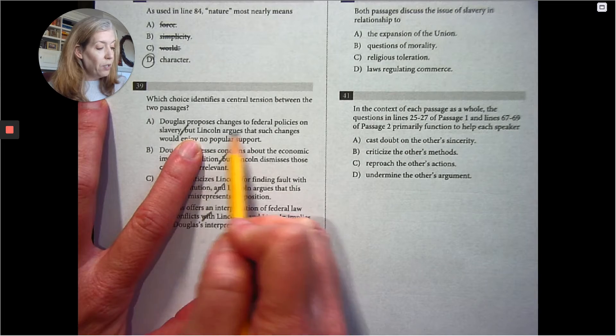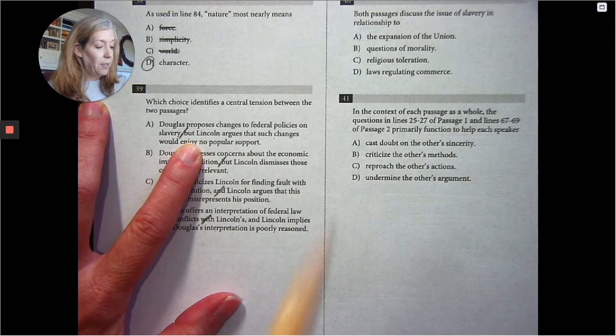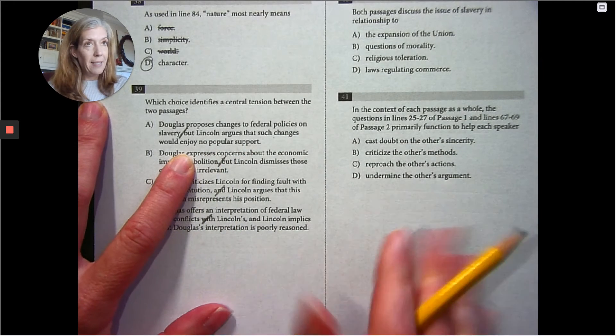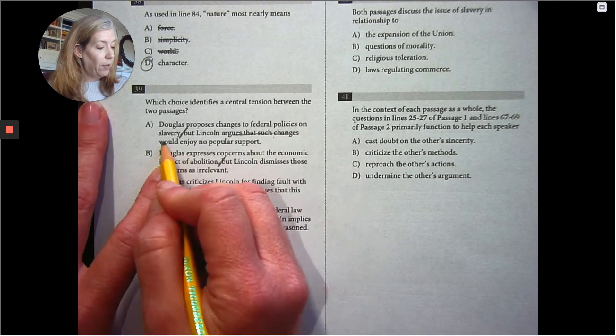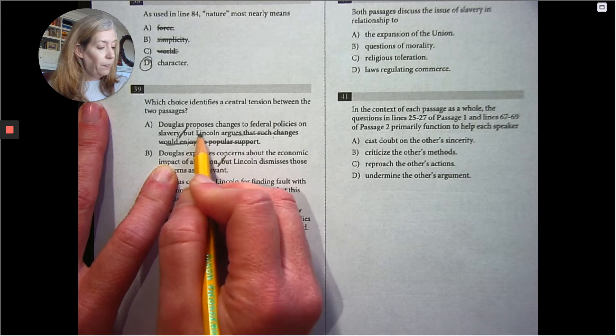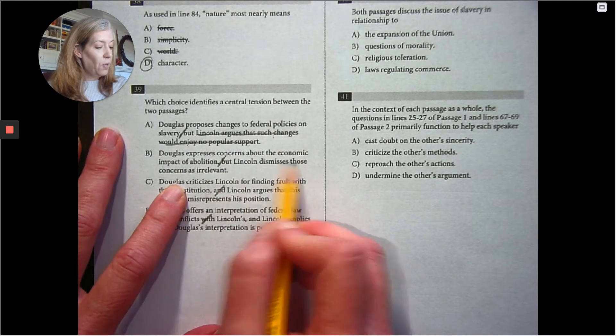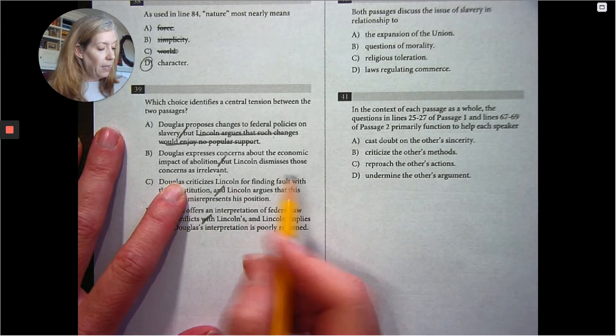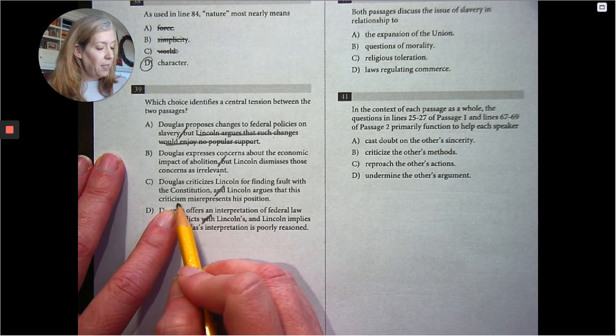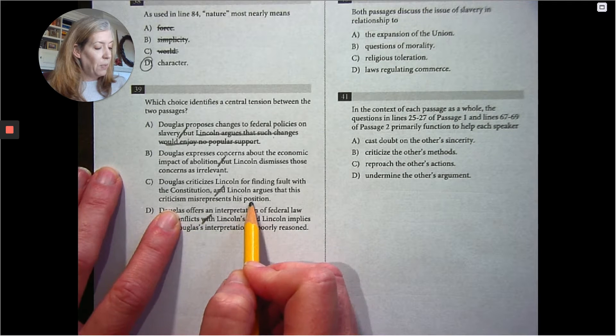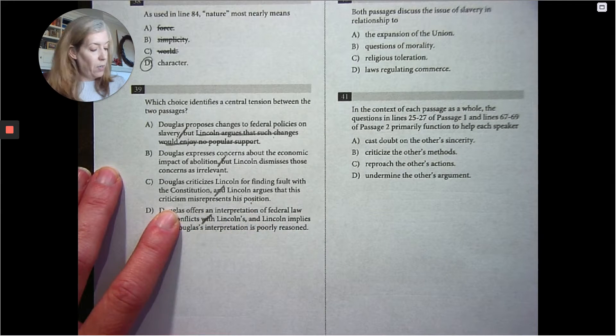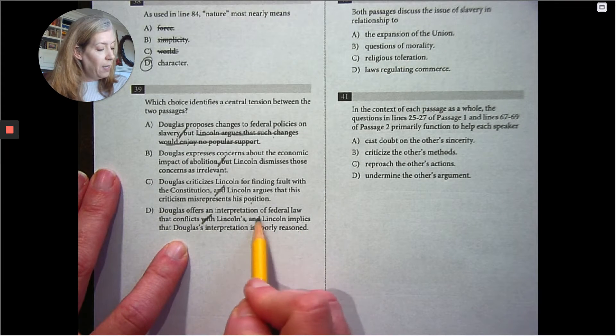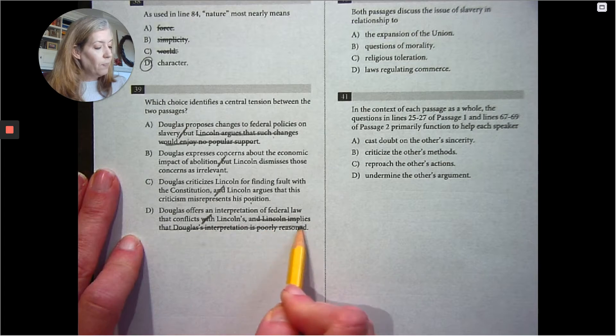Lincoln argues that changes would enjoy no popular support. He doesn't say anything at all about what other people think. Lincoln dismisses those concerns as irrelevant. I'm going to keep that one only because I need a little more context. Lincoln argues that this criticism misrepresents his position. I'm going to keep that one. Lincoln implies that Douglas's interpretation is poorly reasoned. It's not true.